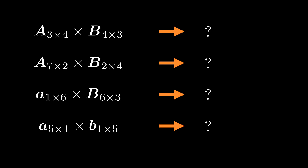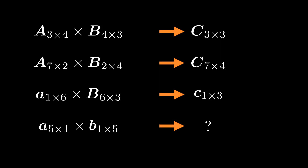Let's look at four examples to find the dimensionality of the output matrix. First: matrix A is 3 by 4 and matrix B is 4 by 3 — the middle 4s cancel and we get C of size 3 by 3. Second: 7 rows from A and 4 columns from B gives C of size 7 by 4. Third: a row vector multiplied by a matrix gives a row vector with dimensionality 1 by 3. Fourth: multiplying two vectors — note this is not the vector dot product — gives a matrix of size 5 by 5.